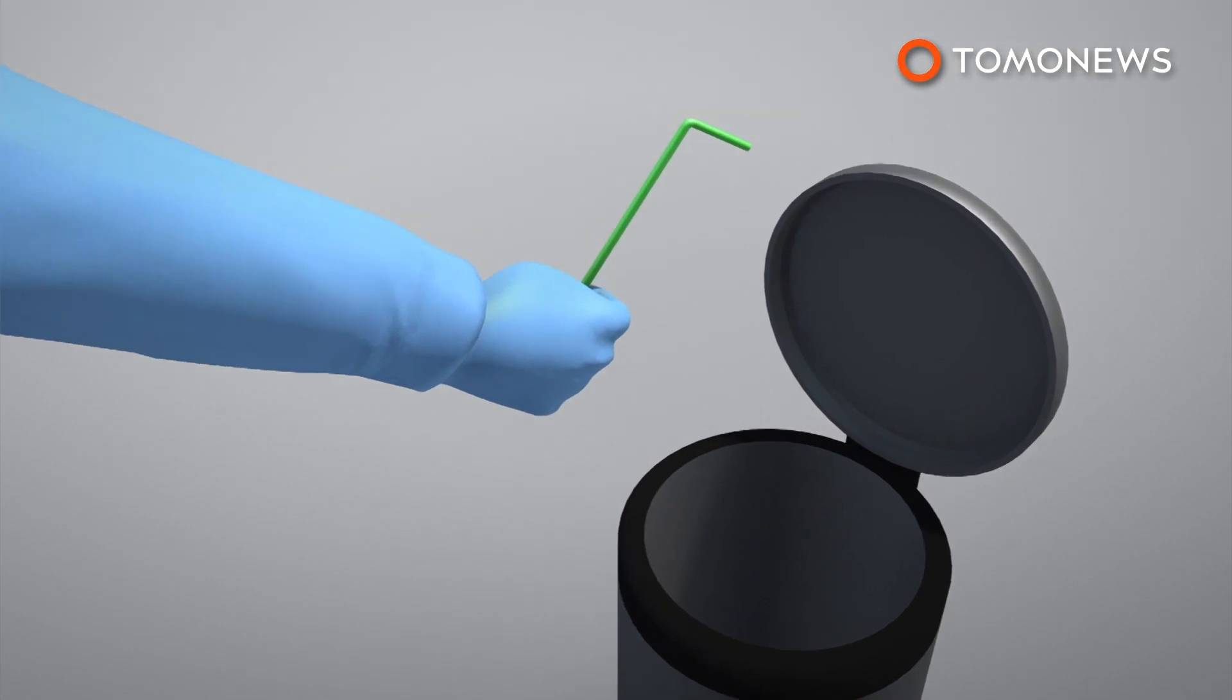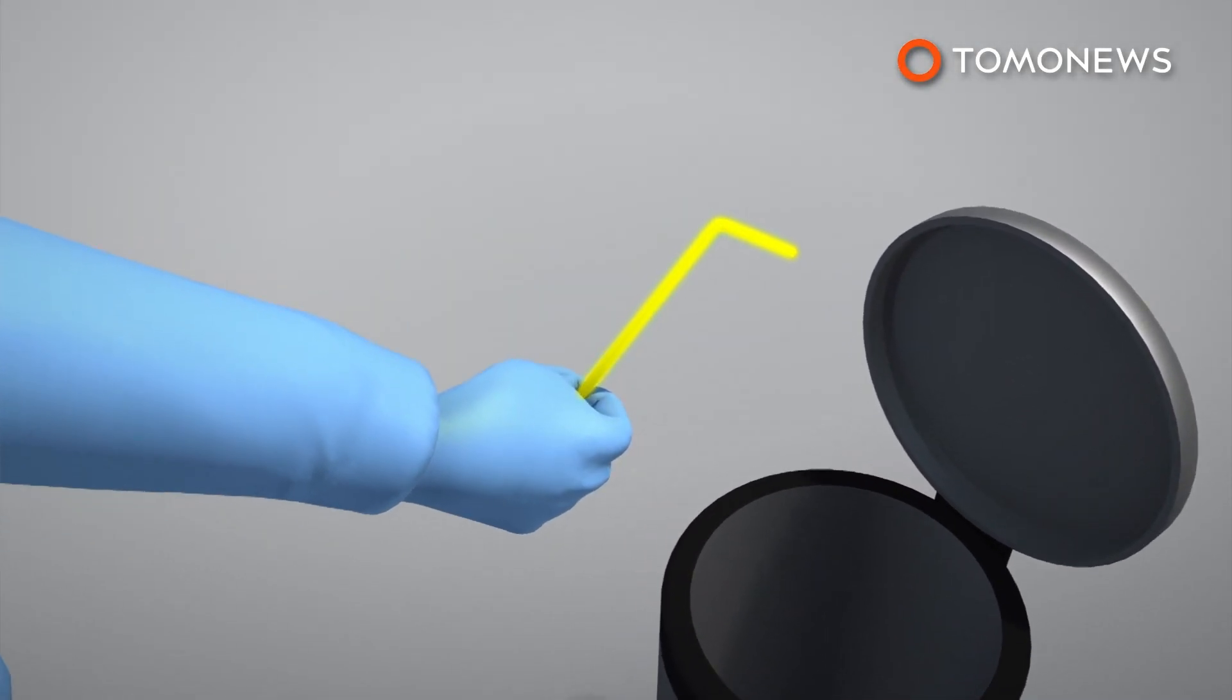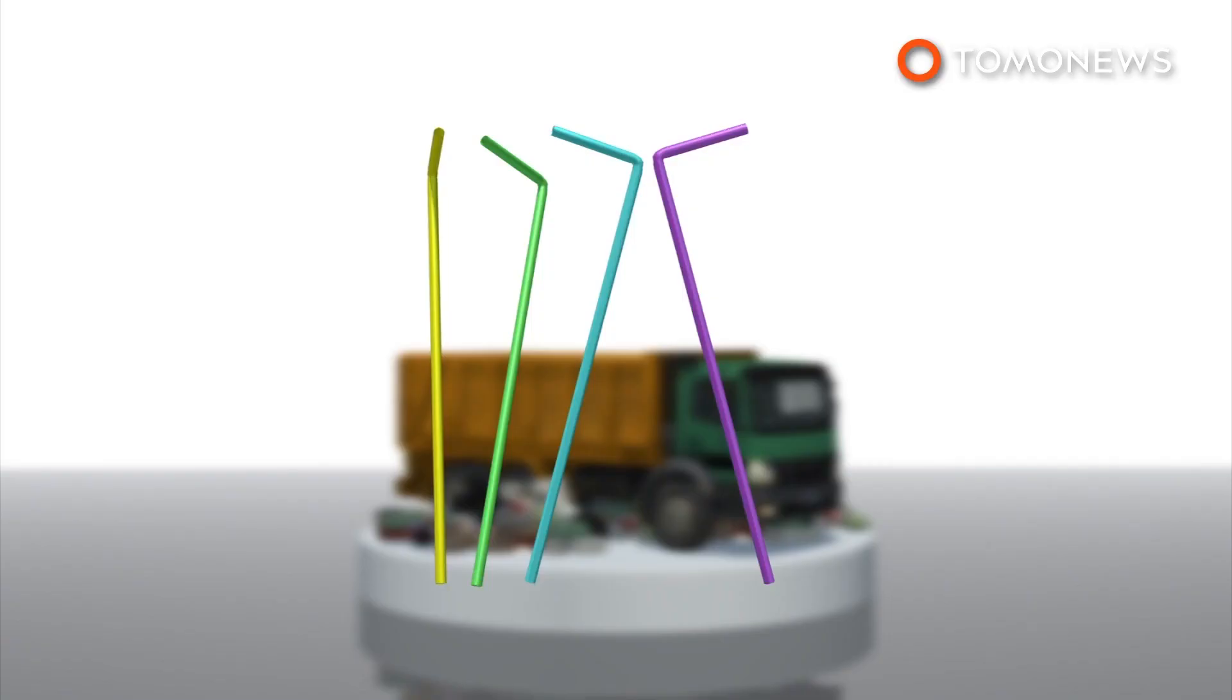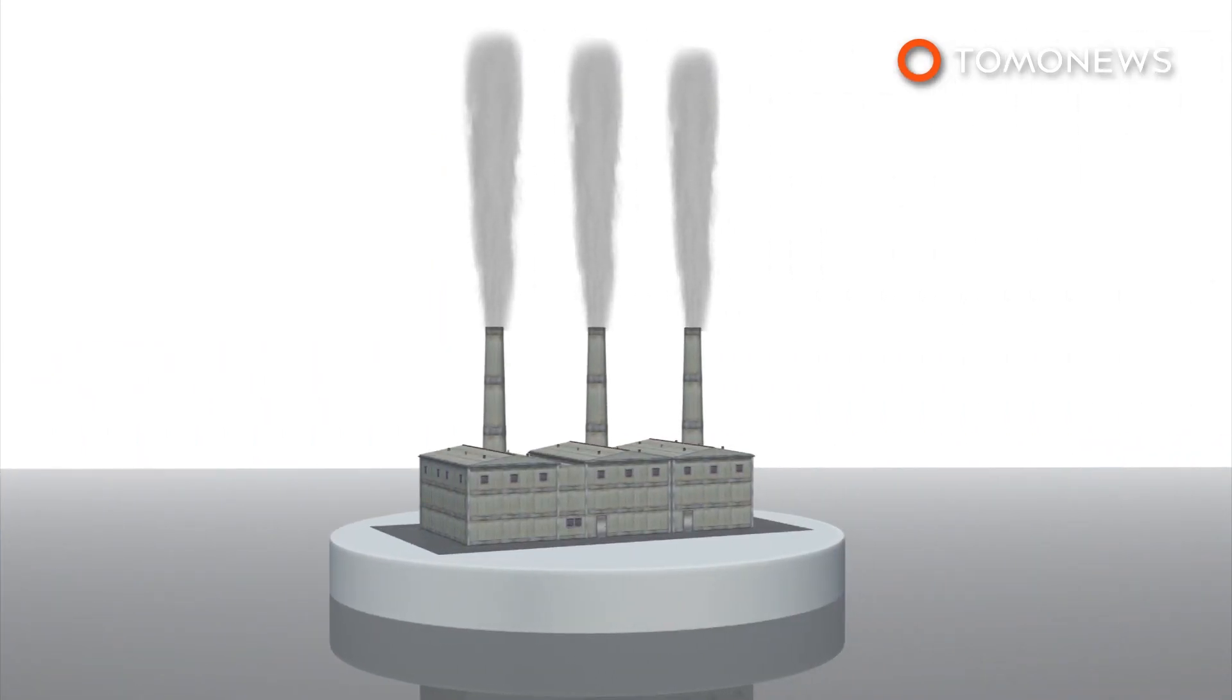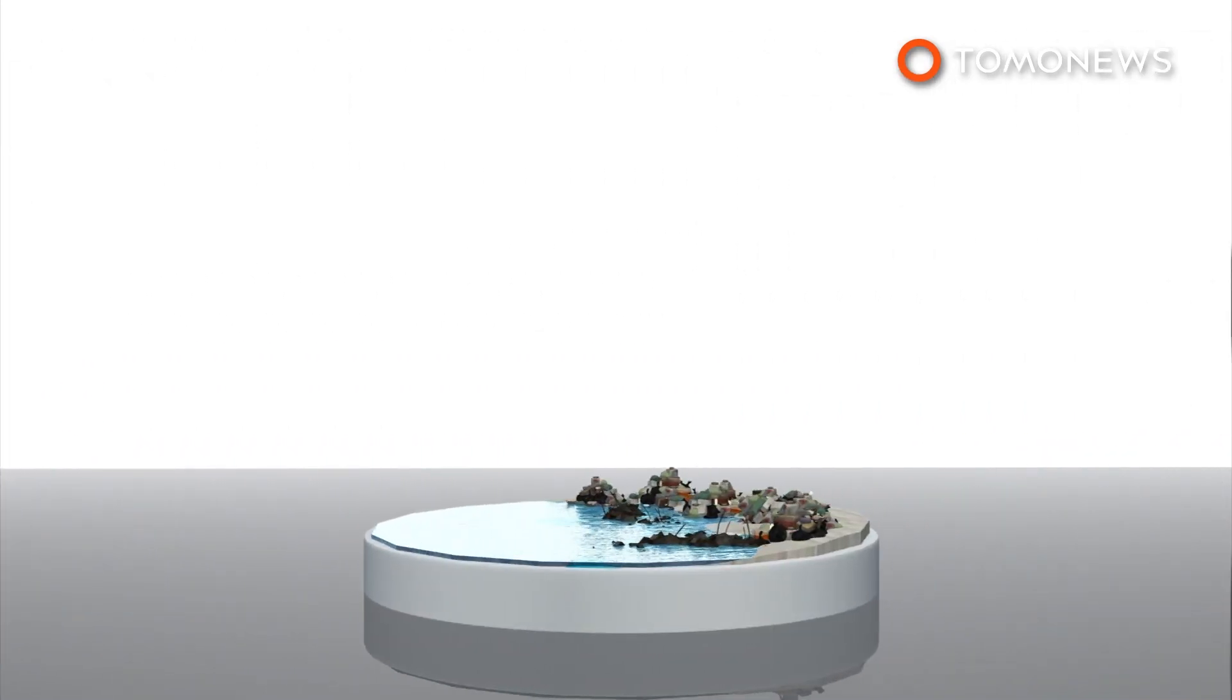In the UK, 8.5 billion plastic straws are used each year. Straws are difficult to recycle and usually end up in landfills or being incinerated. But they are increasingly clogging up waterways and oceans as well.